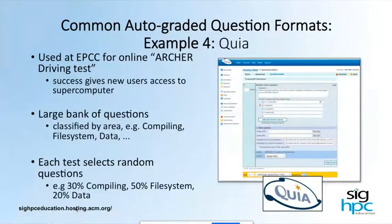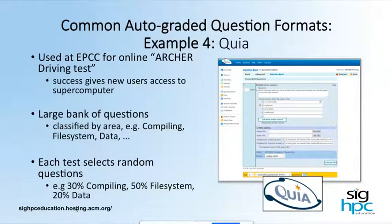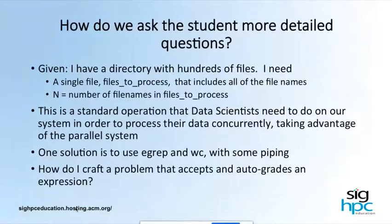Finally there's CUA, also used at EPCC. The value of this one, as David would point out, is that you have a very large bank of questions. When you go to set up an exam, you can say, for example, 'I want 30 percent of my questions about compiling, 50 percent about the file system, and 20 percent about data.' If you were looking at data scientists using third-party built packages, you might want 50 percent data, 30 percent file system, and 20 percent submitting packages on the system — depending on what people need to know when working with a Linux system.